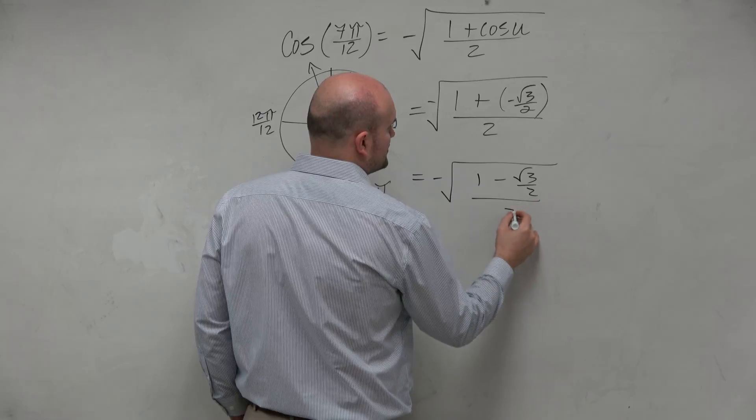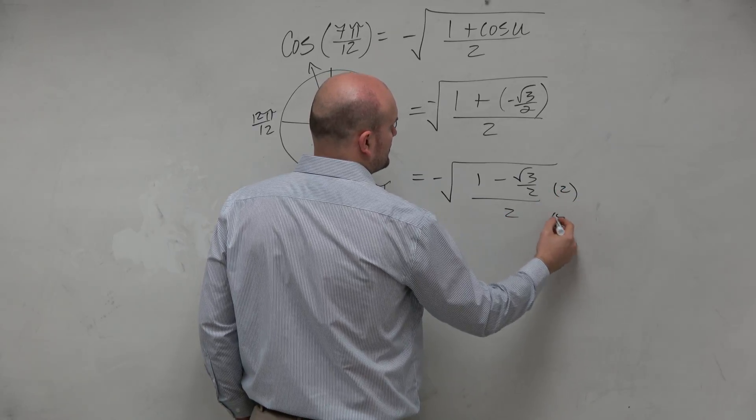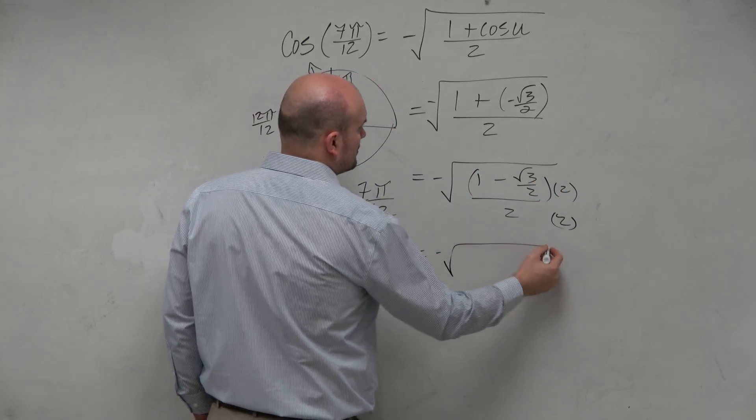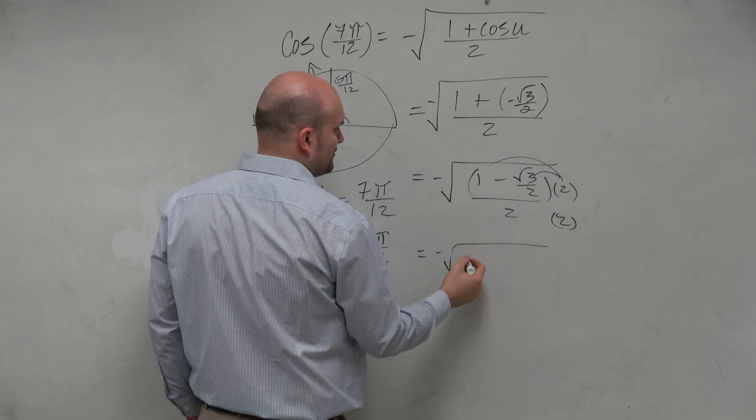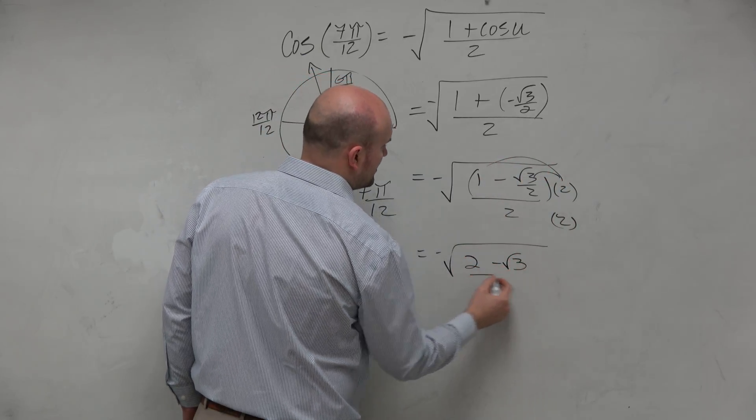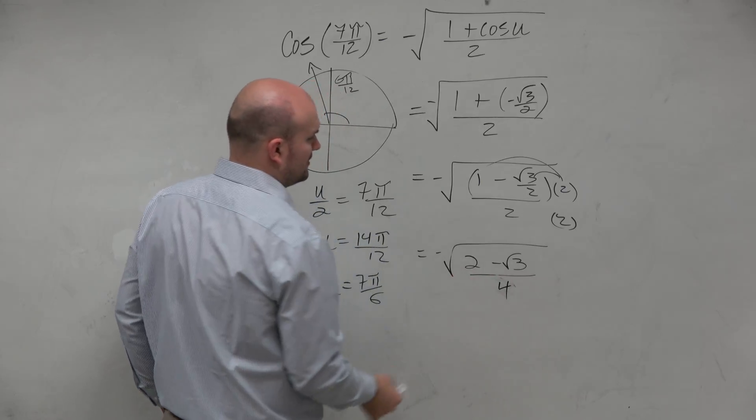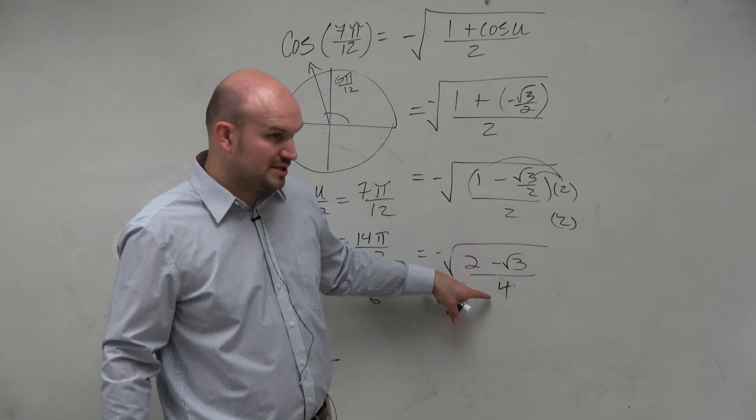Square root over 2 over 2. I multiply by 2 over 2. Make sure you apply the distributive property. So therefore, I get 2 minus the square root of 3 over 4.